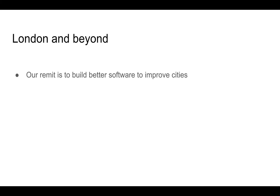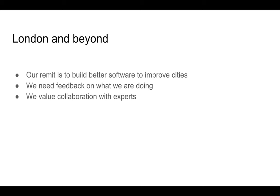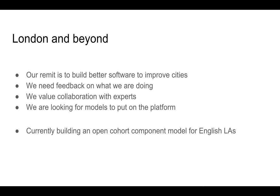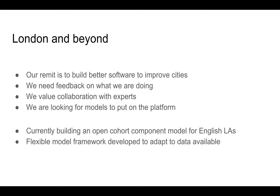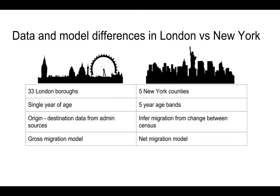Where are we going next? We have a remit to build better software to improve cities. We need testers and feedback, and we very much value the collaboration of experts. We're looking for models to put on the platform, so please get in touch. We're currently working on an open cohort component model for English local authorities, with a flexible framework developed with GLA experts, adaptable to the data available. For example, we've talked to New York, where they have counties as the equivalent of London boroughs and only five of them. The data comes in five-year age bands and they don't have the origin-destination data we have — therefore they rely on inferring migration from the change between each census, requiring a net migration model rather than a gross migration model as we can use here in the UK.